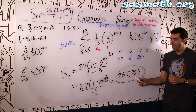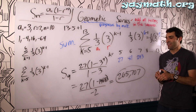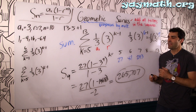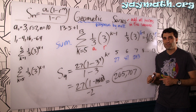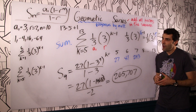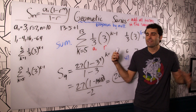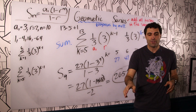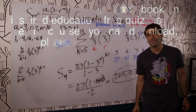If you start at 27 and go up to nine terms, you're going to end up adding to 265,707. That's the power of multiplication — how fast it can progress really, really fast. Geometric series — geometric sequence, add them up. I hope it all added up for you. Thank you. Bye. Thanks for watching.